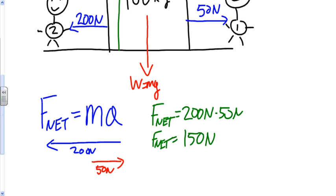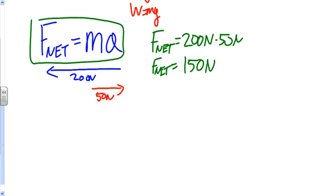Now, what does F net equal? That's right. Mass times acceleration. So, if we know F net, we can find the acceleration in the block.